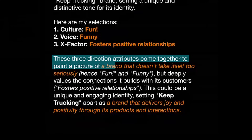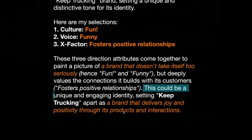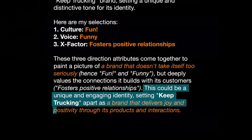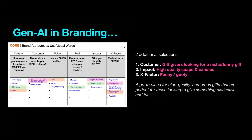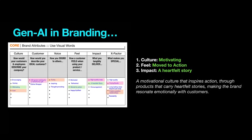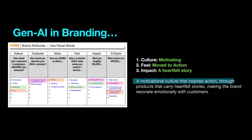What's cool is we can remove our prejudice, our assumptions, our personality, and step back — the AI finds things based off of what the customer said, so it's not me driving it. I asked for two additional selections: gift givers looking for a niche funny gift with high-quality soaps and candles for the second, and motivating, move to action, a heartfelt story for the third. Then I told it to take those words and break them down: words, why chosen, other brands with similar styling, recommended colors, typography, and imagery. From this I could hand it to a designer — it spells out everything that would go into the design of a mood board.